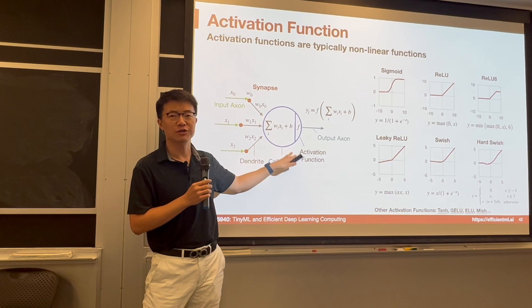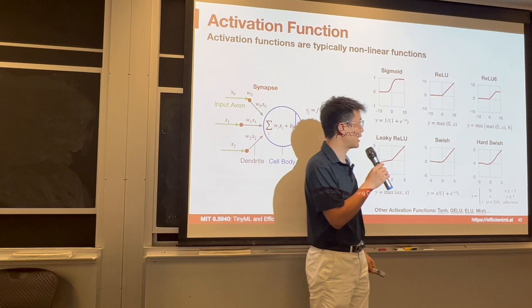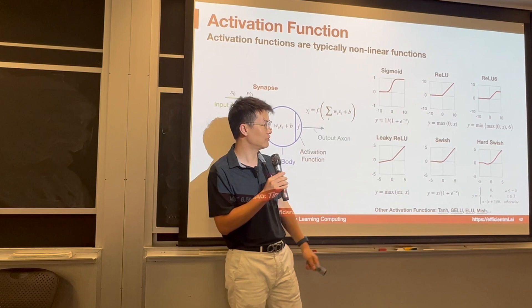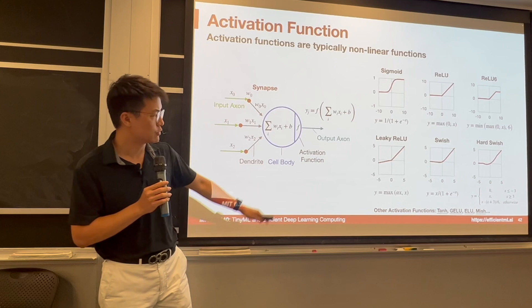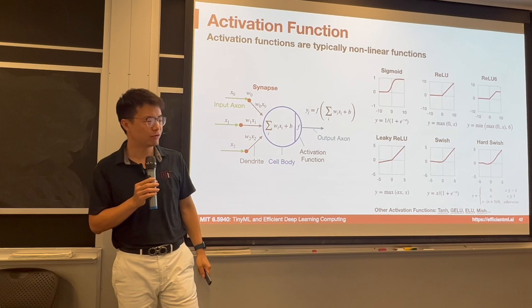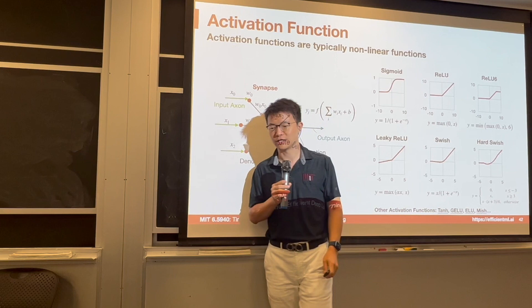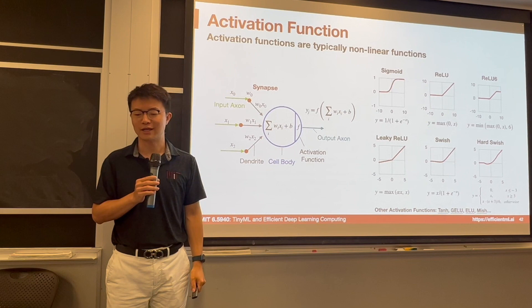Next, activation functions. Only if the activation is larger than a threshold does the neuron fire — that's the ReLU activation function. ReLU6 clips at 6, which makes it easier to quantize. Leaky ReLU, Swish, and Hard Swish provide gradients when input is negative, as opposed to zero gradient in ReLU's negative region. A key point: ReLU is very hardware friendly. Some activation functions are difficult to quantize and not hardware friendly, so unless really necessary, it's best to avoid hardware-unfriendly activation functions.